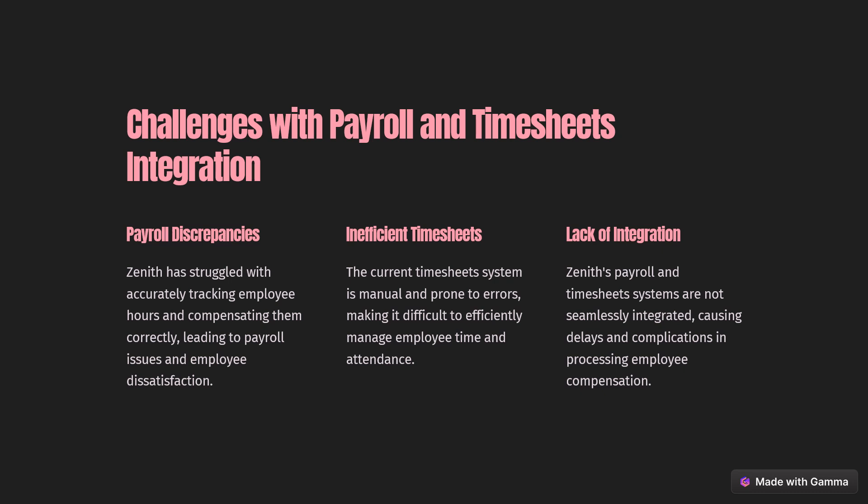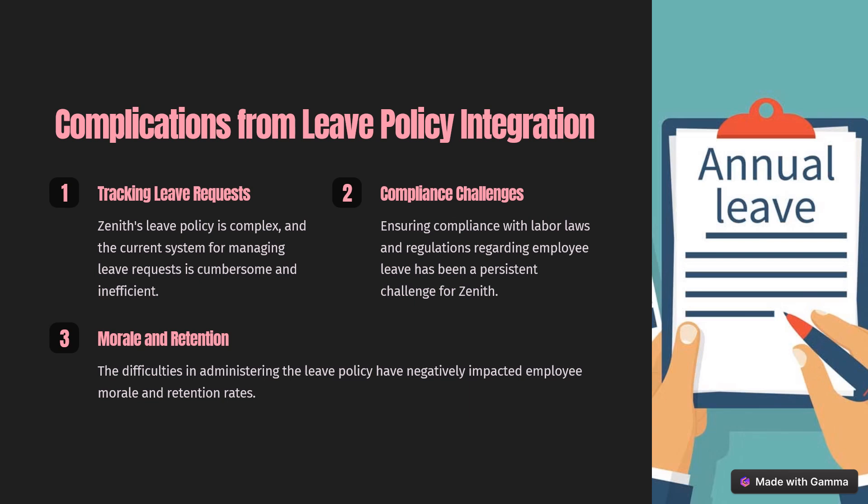In the next slide, I am discussing the challenges a company can face when integrating payroll and timesheets. First is payroll discrepancies — Zenith struggled with accurately tracking employee hours and compensating them correctly, leading to payroll issues and employee dissatisfaction. Second was inefficient timesheets — the current timesheet system is manual and prone to errors, making it difficult to efficiently manage employee time and attendance. Third was lack of integration — Zenith's payroll and timesheet systems were not seamlessly integrated, causing delays and complications in processing employee compensation.